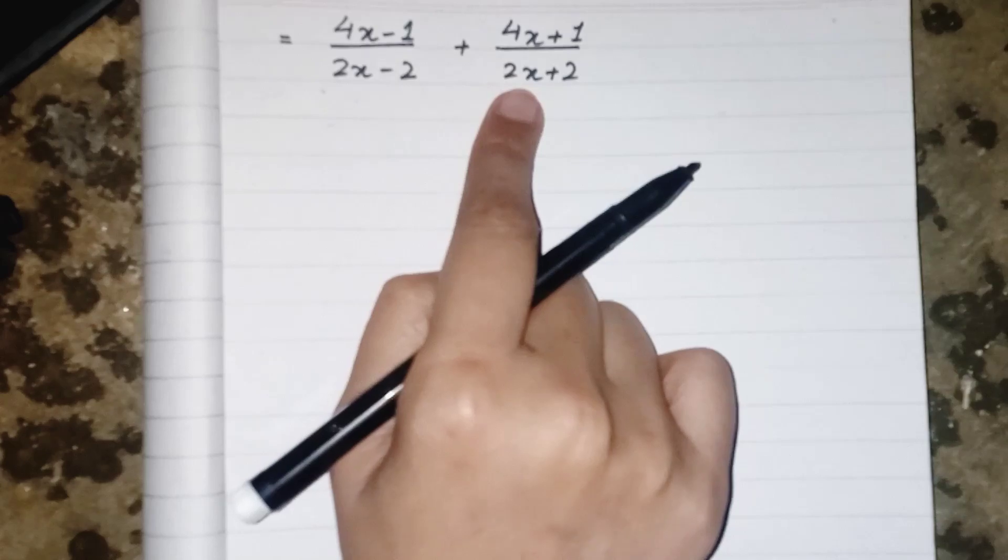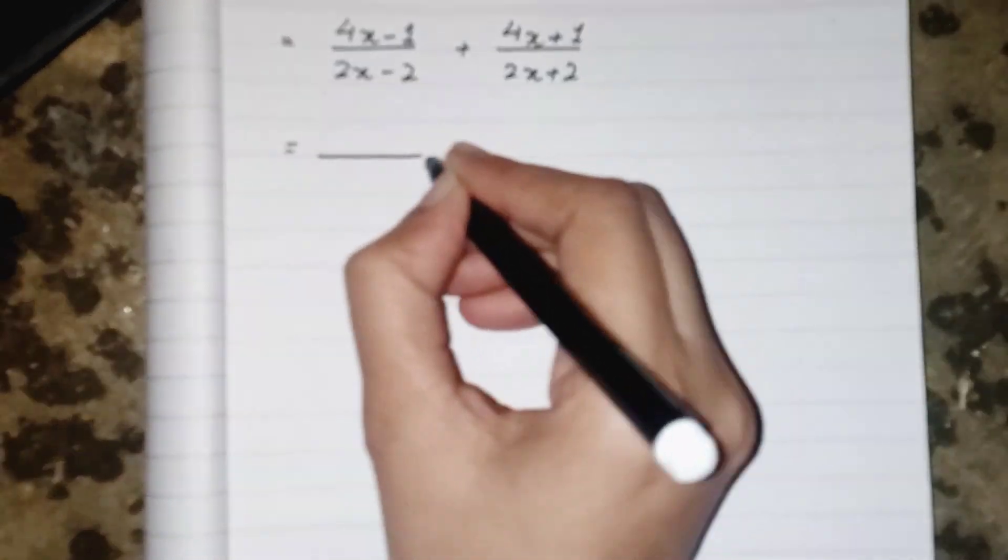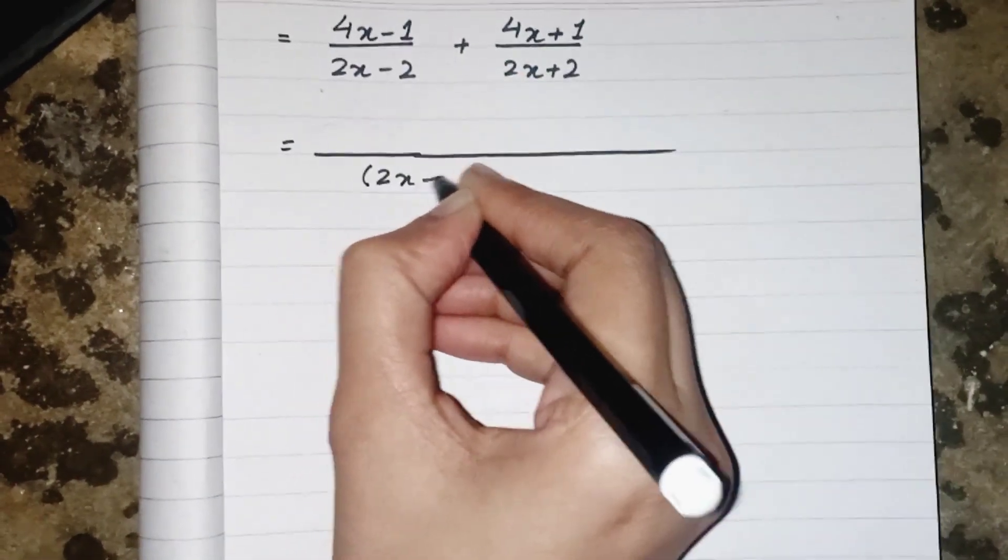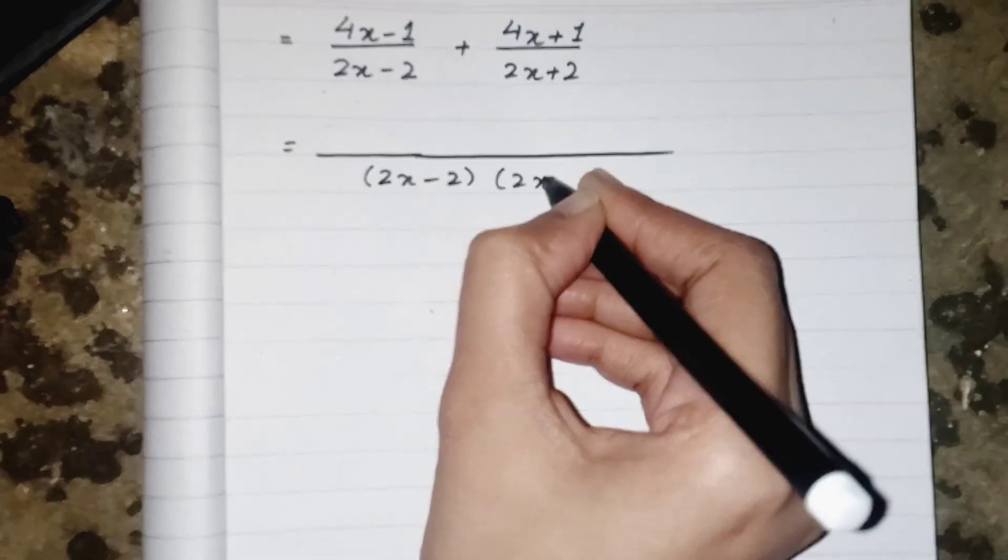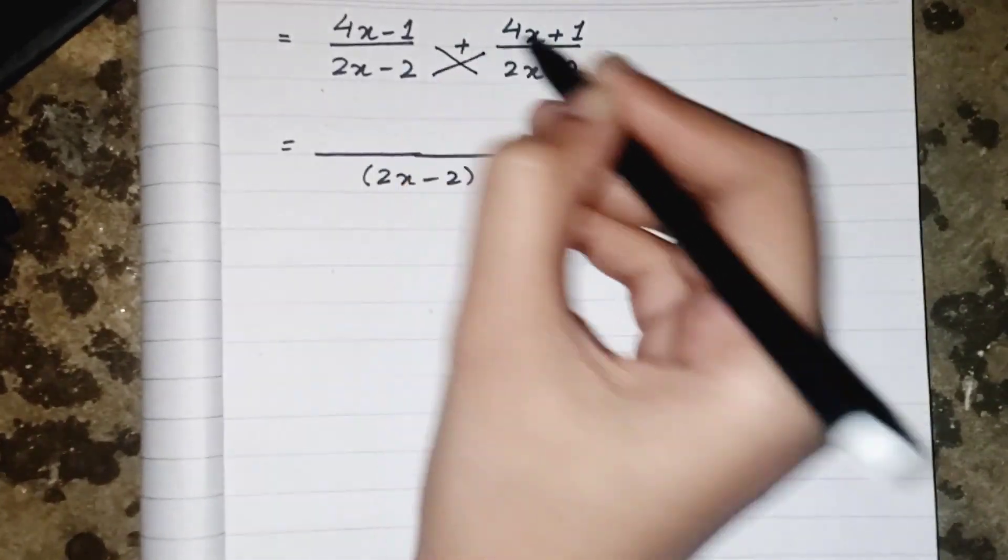Now we have two fractions and both are added to each other. So what we have to do, we have to take LCM of denominator. So we are just multiplying both denominators to take their LCM. And for numerator, we have to apply cross multiplication.